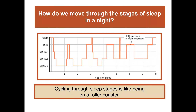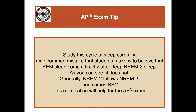How do we move through the stages of sleep in a night? Cycling through sleep stages is sort of like being on a roller coaster — not going all the way to the deepest and back out once, but cycling down and back up repeatedly. Notably, the amount of REM sleep increases as the night progresses. An AP exam tip: one common mistake students make is believing that REM sleep comes directly after NREM3. It doesn't — generally NREM2 follows NREM3, then comes REM.